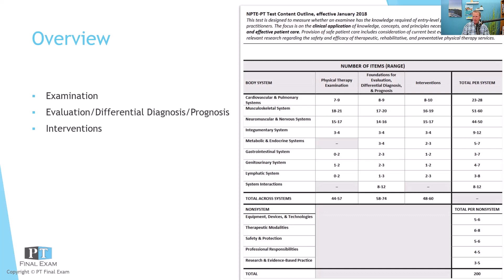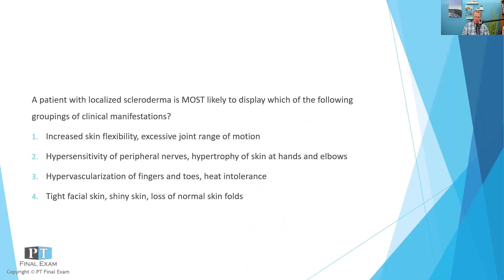Let's go ahead and dive into our practice question. There are nine to twelve questions related to the integumentary system on the exam; this one is related to integ examination. I'll read you the question, give you a moment to respond, and then we'll talk about it together. A patient with localized scleroderma is most likely to display which of the following groupings of clinical manifestations? One: increased skin flexibility, excessive joint range of motion. Two: hypersensitivity of peripheral nerves, hypertrophy of skin at hands and elbows. Three: hypervascularization of fingers and toes, heat intolerance. And four: tight facial skin, shiny skin, loss of normal skin folds.